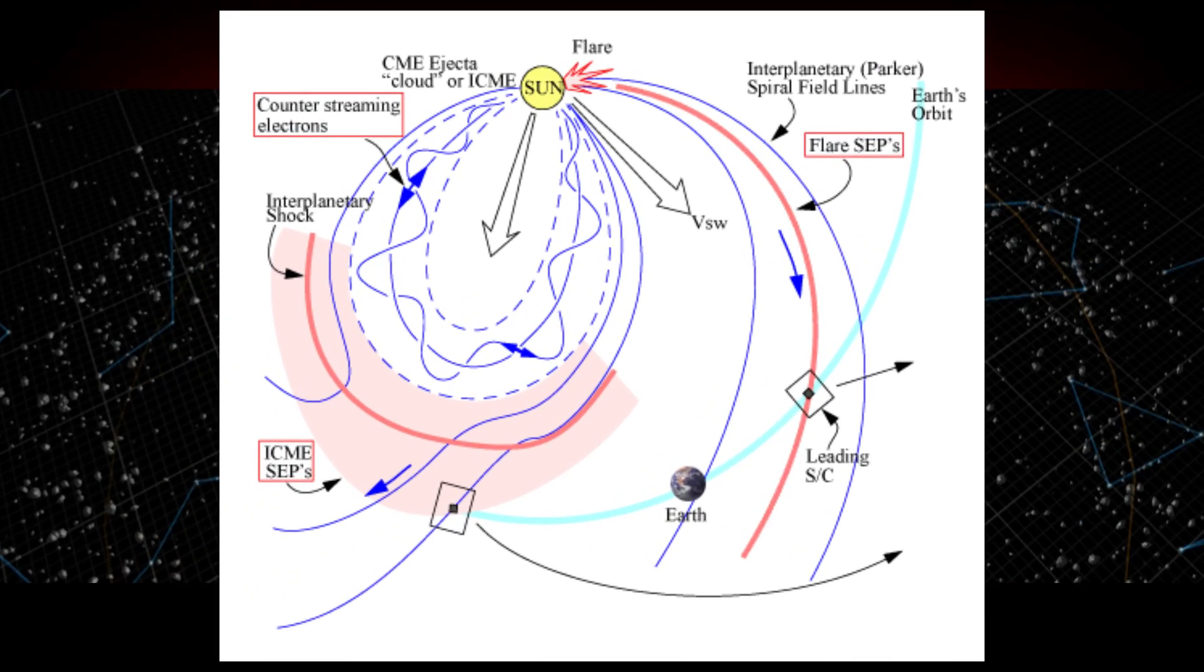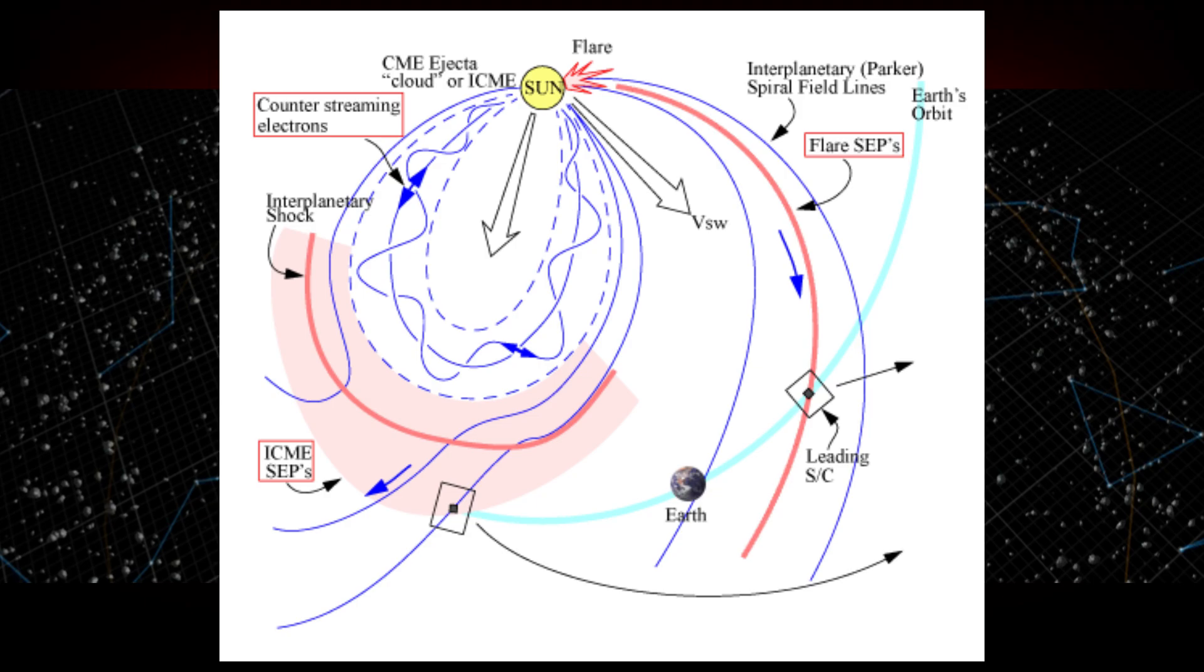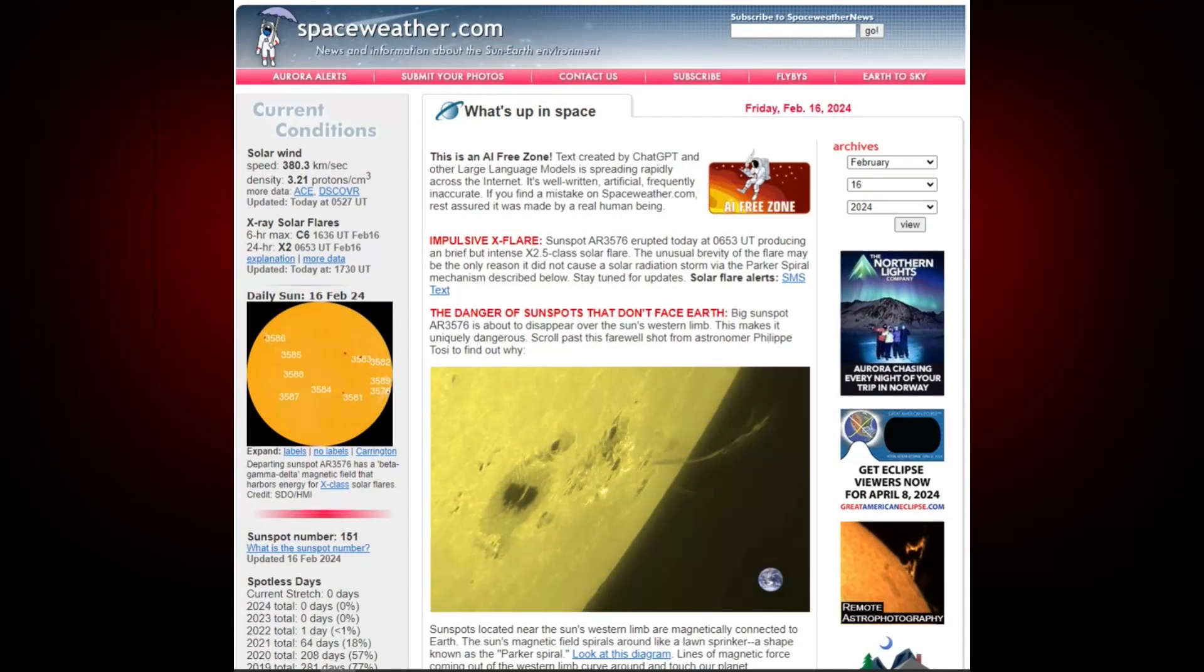This chart here goes on to explain that it is caused by interplanetary or Parker spiral field lines, explaining how the solar particles end up falling right into the Earth's orbit later on. Also jumping over to a very good website, spaceweather.com.